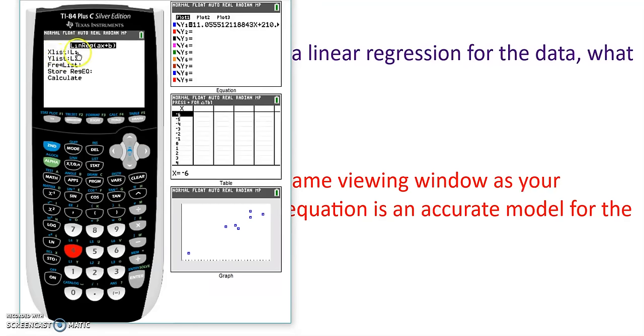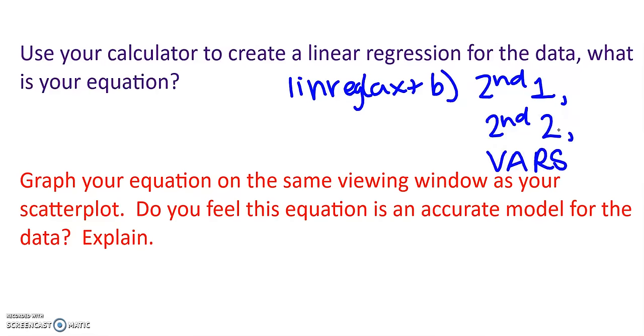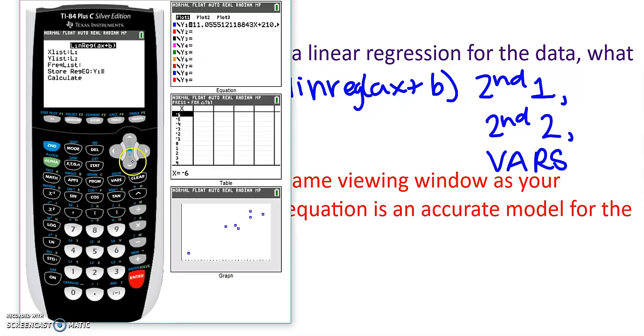And then it tells me, do I want my x list to be list one? And yes, yes, I do. Do I want my y list to be list two? Yes, yes, I do. And then it gives me the option to store my regression equation. So where I want to store that is in my y one so that it will plot things for me later. So I'm going to go to variables, vars, scroll over to y vars, select function, and select y one. Now, if you have an older calculator, when you selected number four, you might get to your home screen and you see this and a flashing cursor. What you want to press is second one, because that'll get you L one, comma, second two, because that'll get you L two, then go to your vars and get your y vars and your y one.